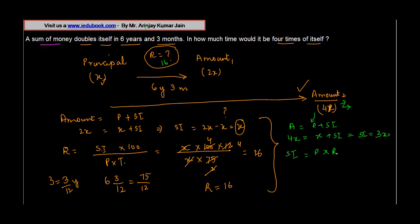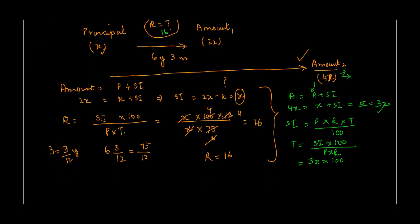Simple interest is equal to principle into rate into time divided by 100, or time is equal to simple interest times 100 divided by P into R. Simple interest is 3x times 100 divided by principle x into rate 16 percent. So this x goes off. 16 and 100 both are divided by 4, so 25 and 4. Nothing moves further, so 75 by 4, or in other words you can write this as 18 years and 3 by 4 years.